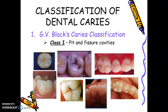We go to G.V. Black's classification. Remember G.V. Black — Green Vardiman Black — the father of operative dentistry. He did five classifications of caries.